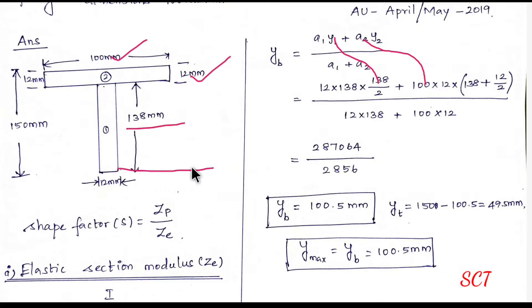which is 138 plus 12 by 2. So how much depth is added, plus this is 10, 12 by 2. So 138 plus 12 by 2. Divide by this A1 and this A2.